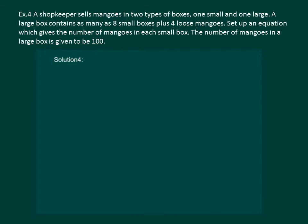Let us read the question. A shopkeeper sells mangoes in two types of boxes, one small and one large. A large box contains as many as 8 small boxes plus 4 loose mangoes. Set up an equation which gives the number of mangoes in each small box. Now since the number of mangoes in the large box is dependent on the number of mangoes in the small box, let us assume let number of mangoes in the small box be X.